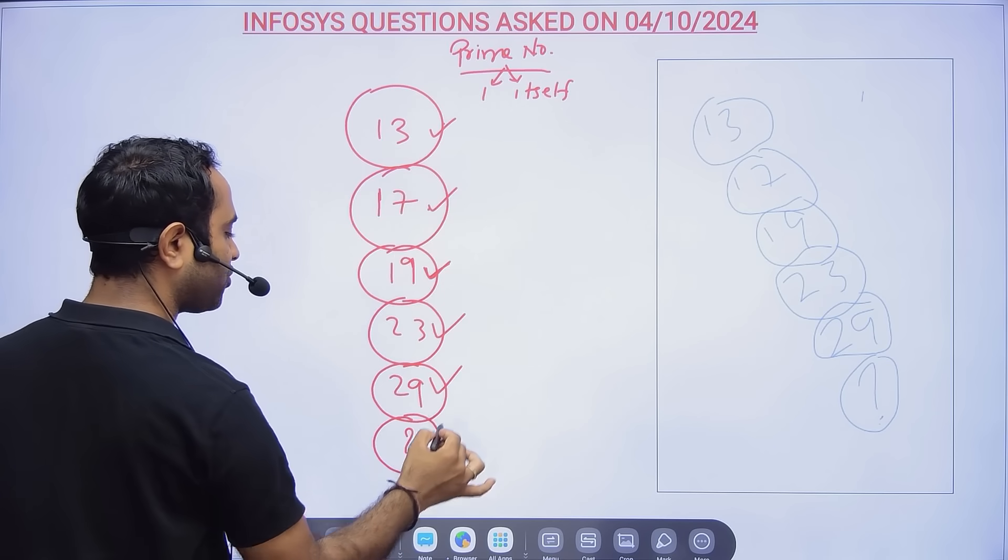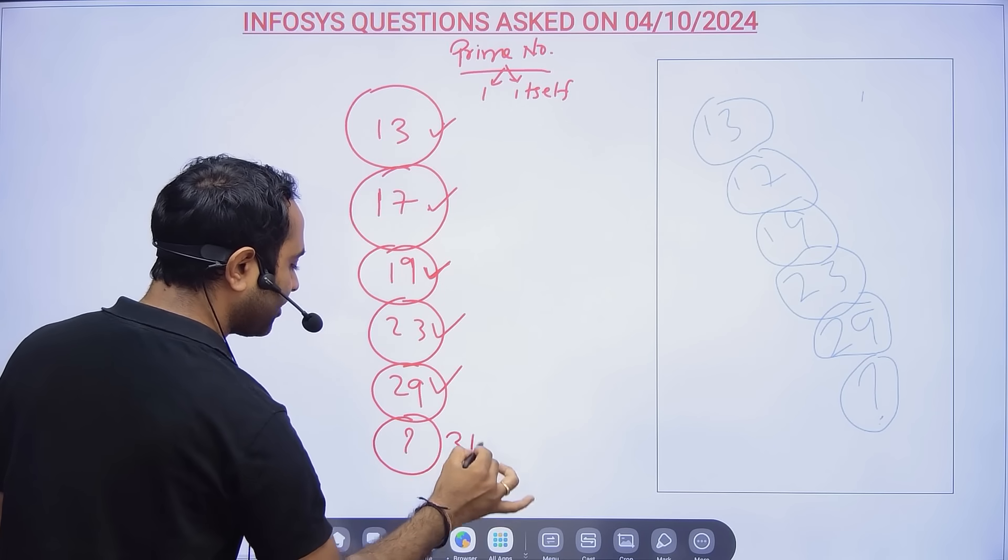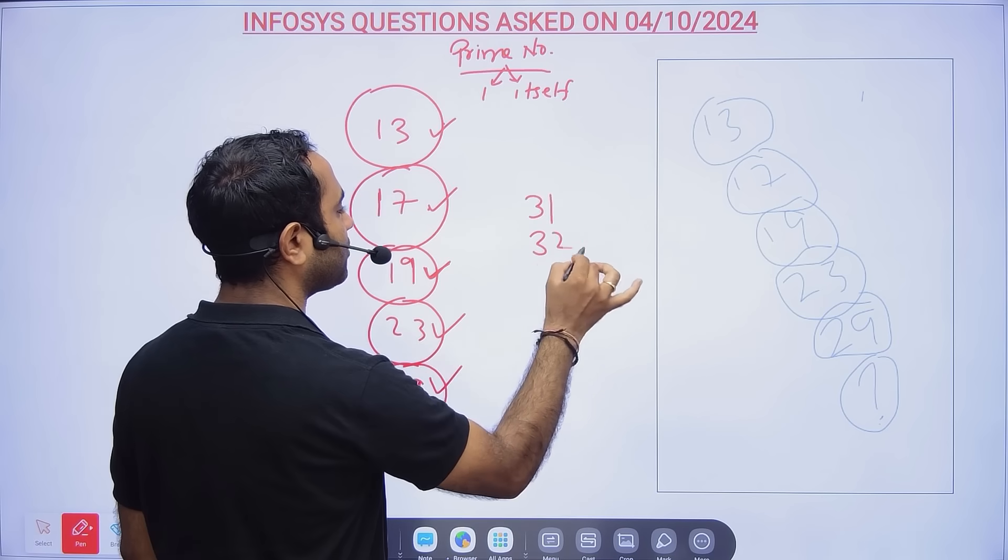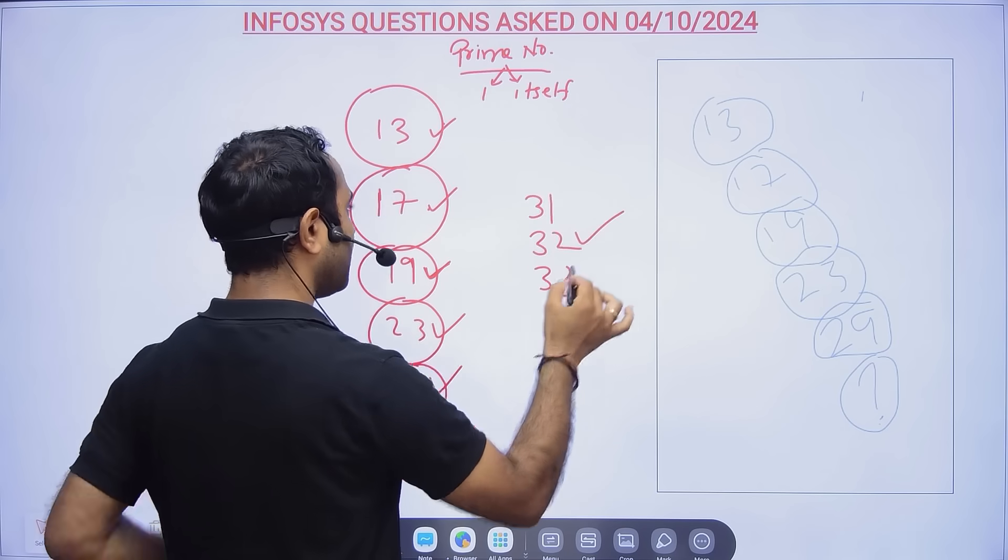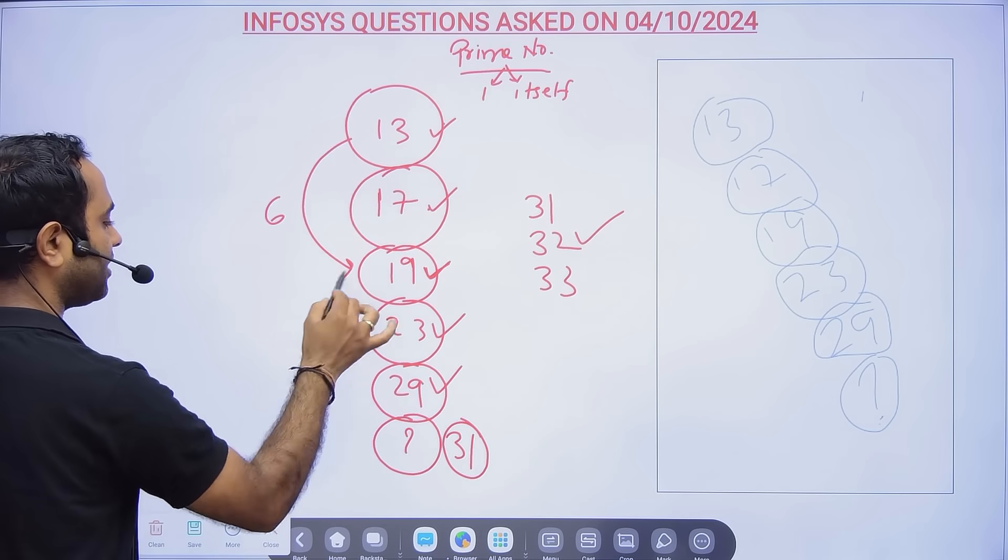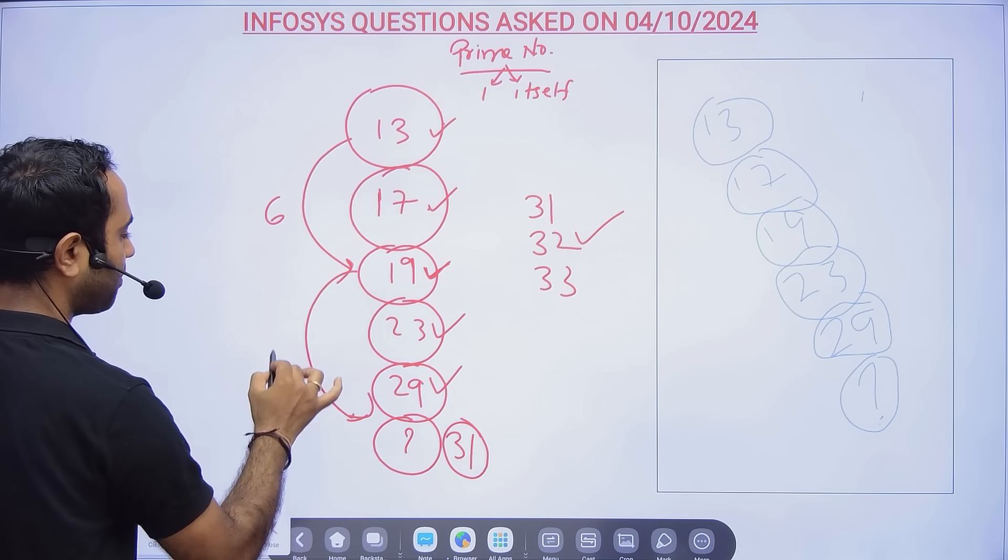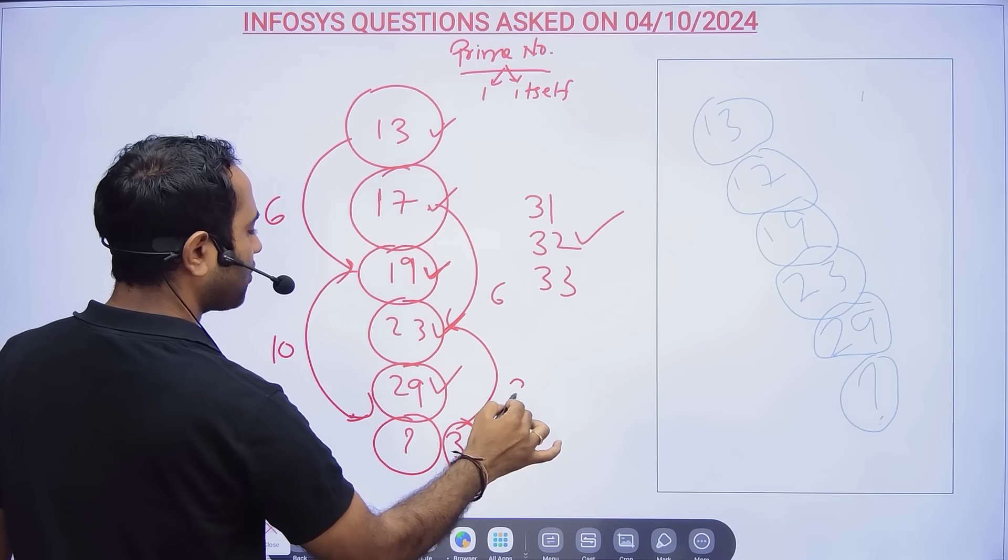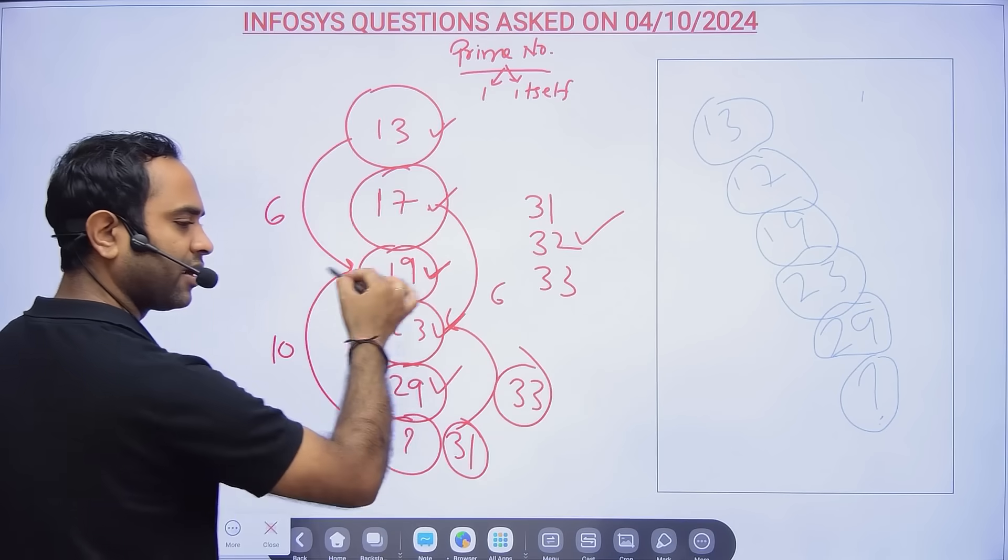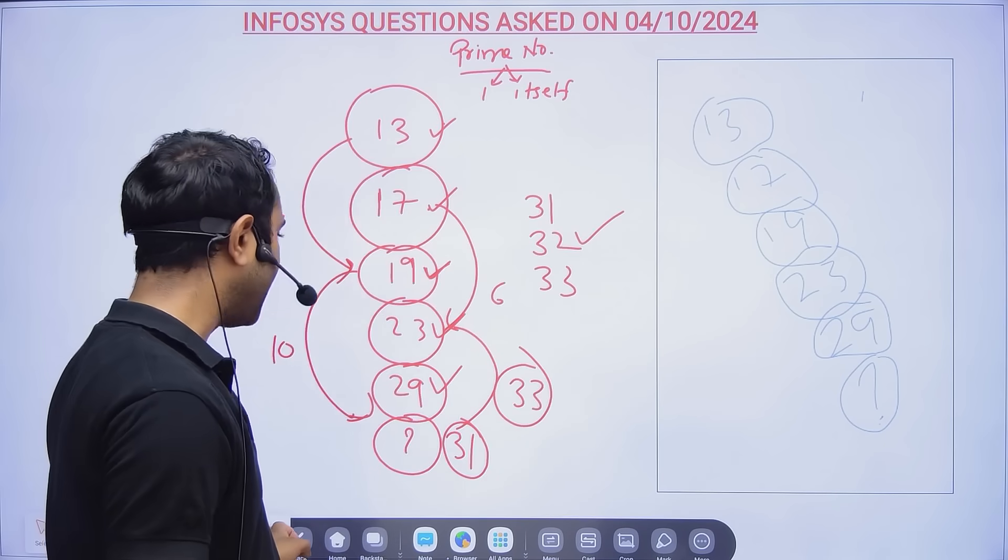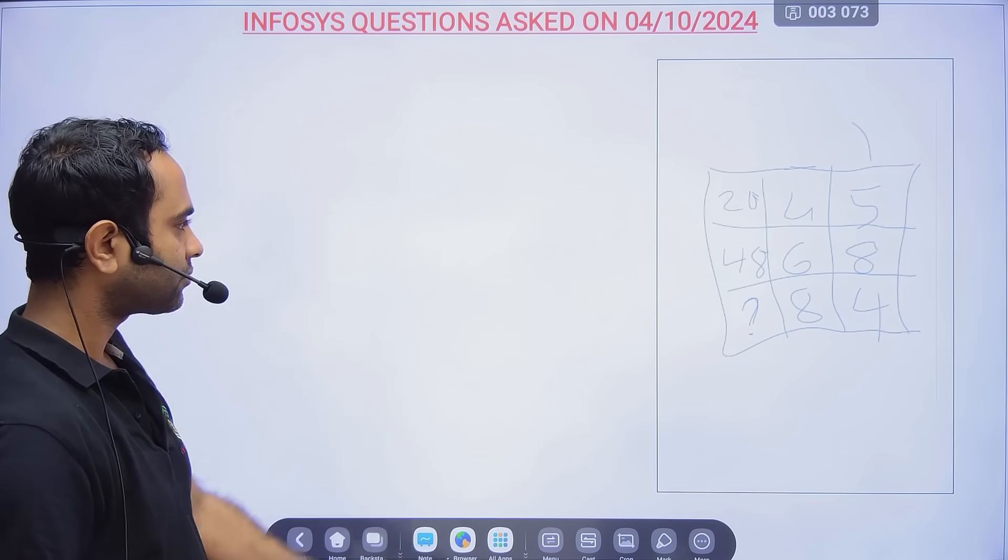The next prime number will be 31. Prime number is a number which is divisible by 1 and itself. There were options like 31, 32, 33. Many students were marking wrong answers like 13 + 6 = 19, then 19 + 10, some kind of logic. That is definitely not correct.